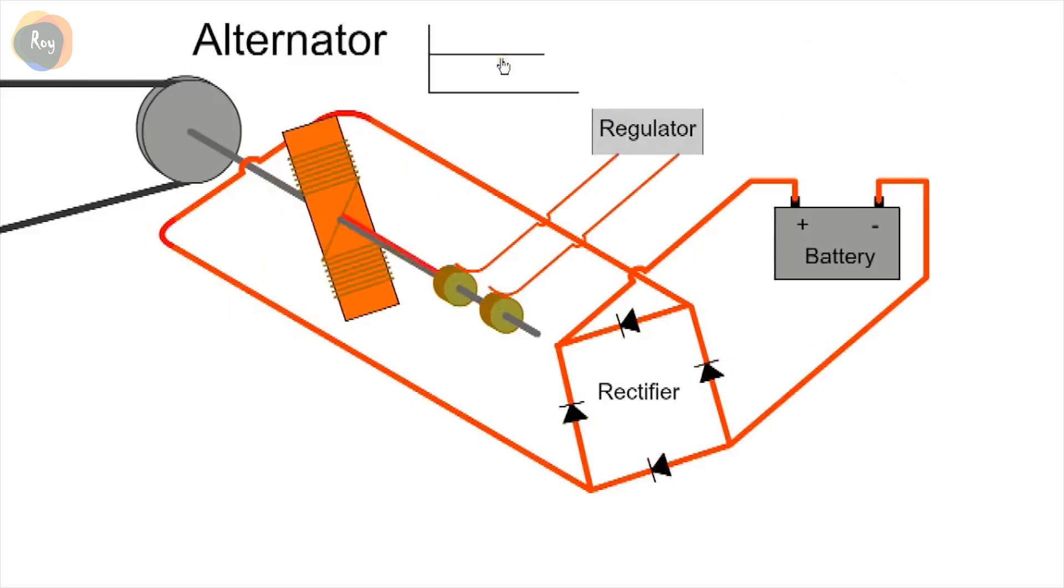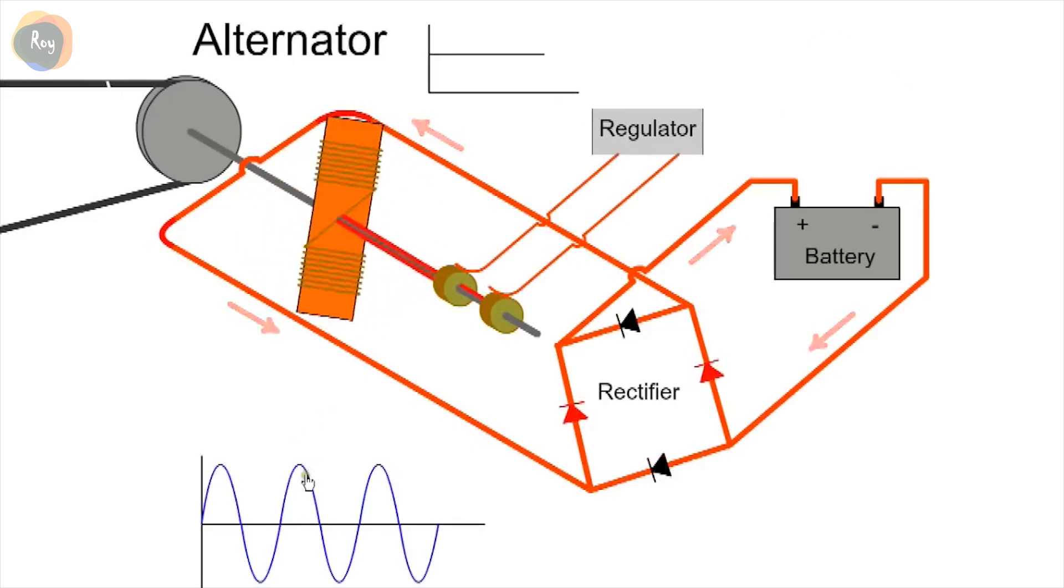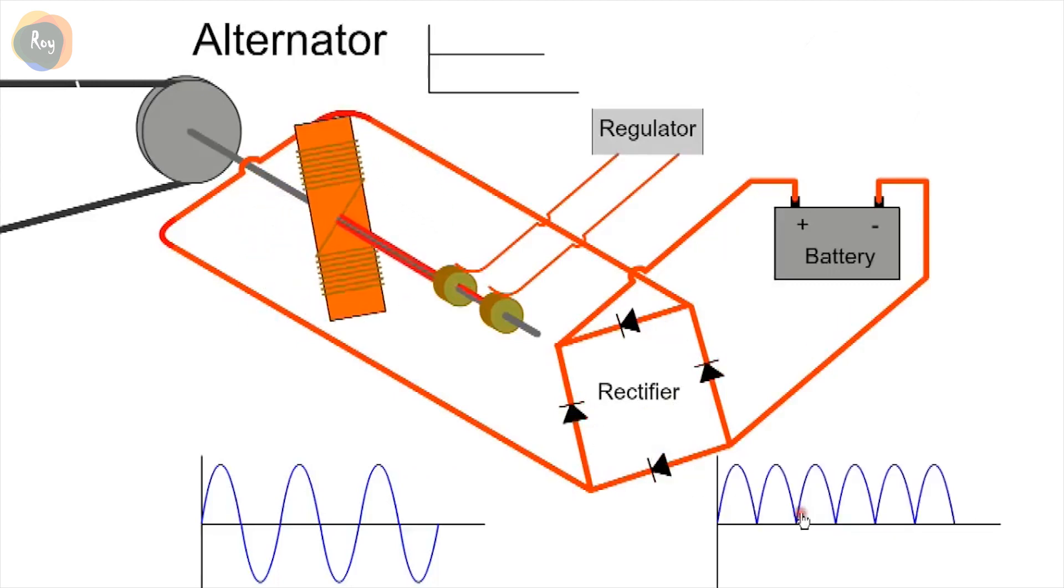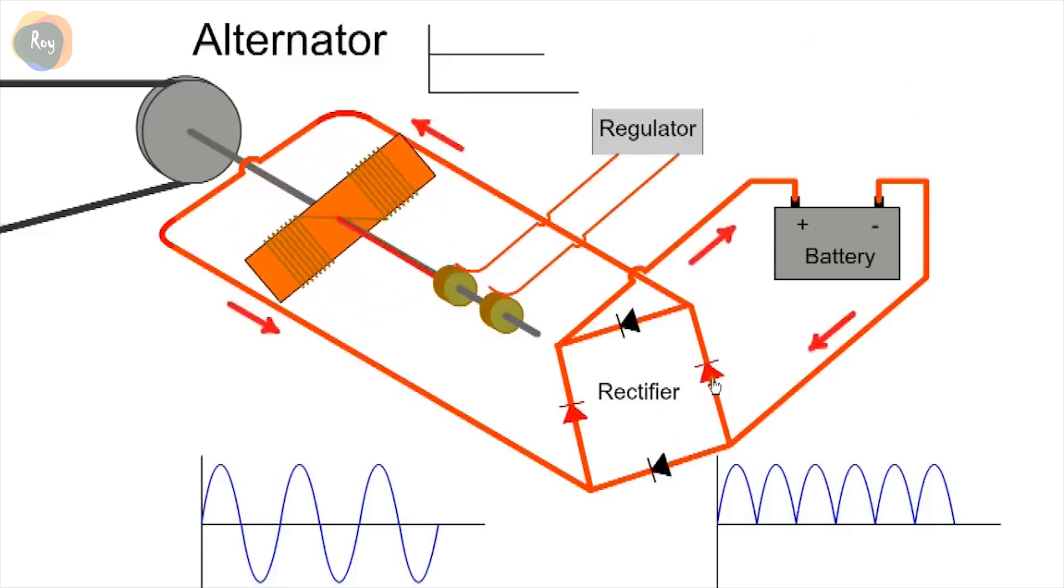As the alternator produces an AC voltage waveform, it must be rectified and converted to DC using a rectifier. The rectifier consists of diodes which act like one-way valves and only allow current to flow in one direction.